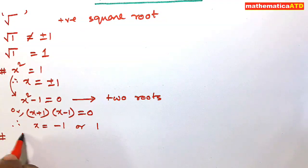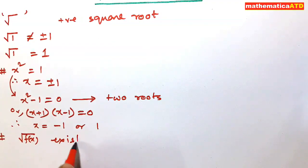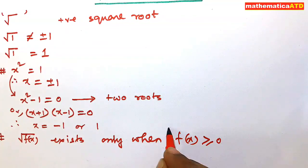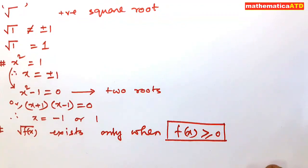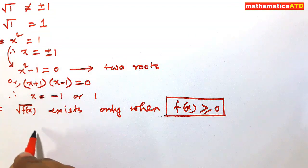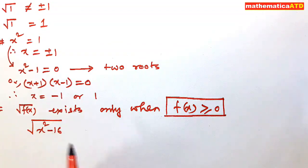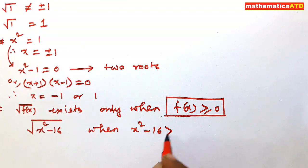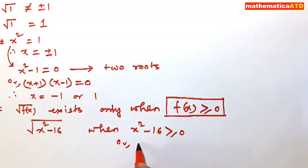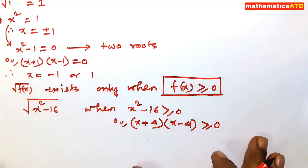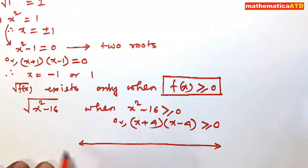The next concept is: root over f(x) exists only when f(x) is greater than or equal to zero. This is very important. For example, if f(x) is x squared minus 16, then the root will exist only when x squared minus 16 is greater than or equal to zero. Factorizing the left side: x plus 4 into x minus 4 is greater than or equal to zero.